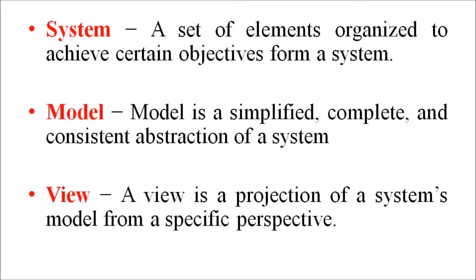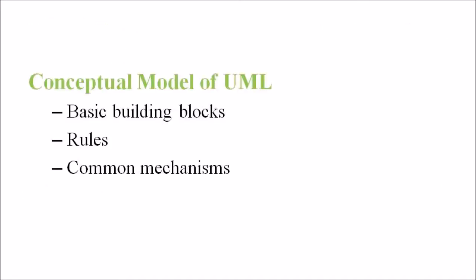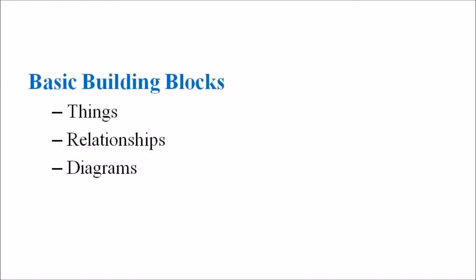When it comes to the conceptual model of UML, it encompasses three major elements: basic building blocks, rules and common mechanisms. We are going to discuss in detail about each of these elements. The basic building blocks consist of three parts: things, relationships and diagrams.